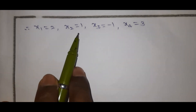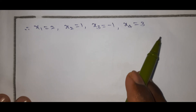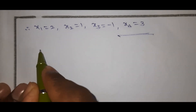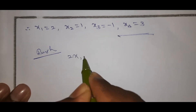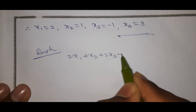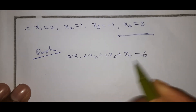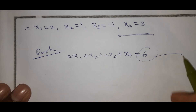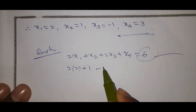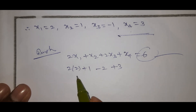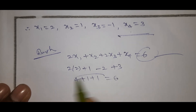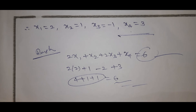Verification: substituting x2 = 1, x3 = -1, x4 = 3 into equation 1 gives 2×1 + 1 - 2 + 3 = 4 + 1 + 1 = 6. That checks out. So x1 = 2, x2 = 1, x3 = -1, x4 = 3 is the correct solution. This is the important result from Gauss Elimination.